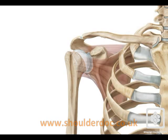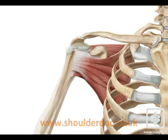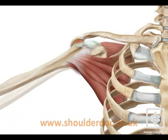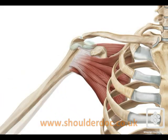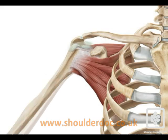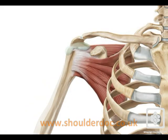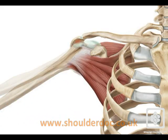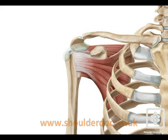Should any abnormality occur affecting the rotator cuff, this would lead to dysfunction of the cuff. Therefore, as the arm is elevated and abducted, the depressing and centralising effect would be lost and the humeral head would ride upwards, closer to the acromion, at risk of causing impingement.